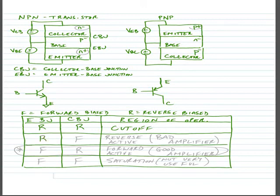If we reverse bias the emitter-to-base junction and forward bias the collector-to-base junction, this is a mode called reverse active region.